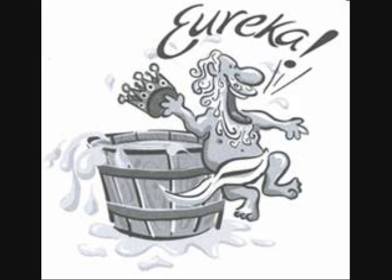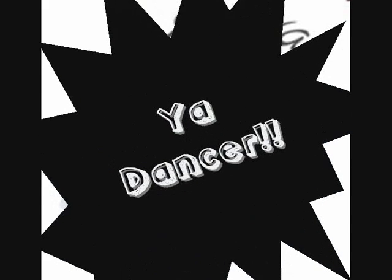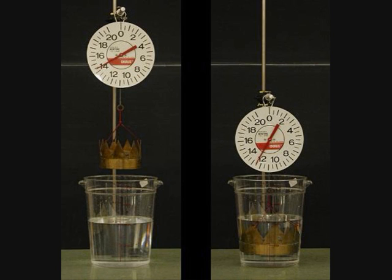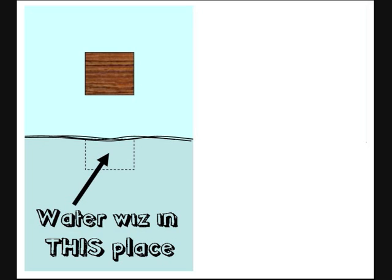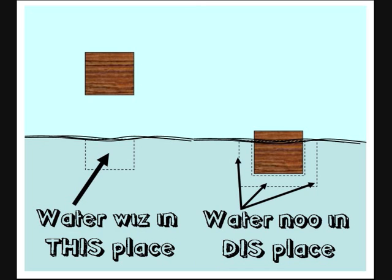Thing is, Eureka is actually Greek translation for ya dancer. Big Archie says any object wholly or partially immersed in a fluid is buoyed up by a force equal to the weight of the fluid displaced by the object. When we talk about displaced fluids, it means the fluid was in this place, now it's in this place. Thing is though, floating's got nothing to do with the weight of the fluid, that's a jammy coincidence. It's all to do with pressure.